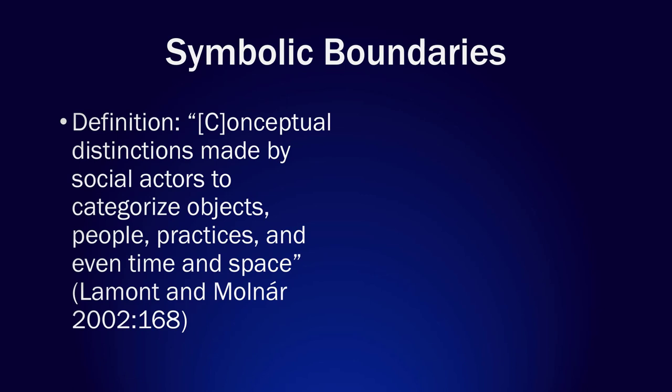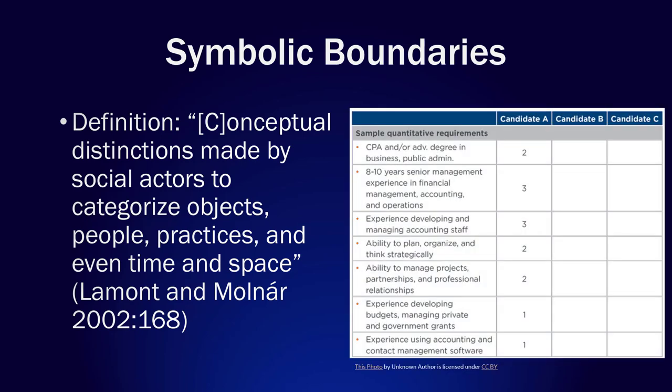Symbolic boundaries are conceptual distinctions made by social actors to categorize objects, people, practices, and even time and space. Basically, they are the distinctions people with agency, or social actors, mentally make in order to distinguish certain things from other things. For instance, a list of qualifications for a job constitutes the symbolic boundaries for that occupation, to distinguish between those who are qualified to apply for the job and those who aren't. However, symbolic boundaries can also refer to a host of other things besides just job application criteria.